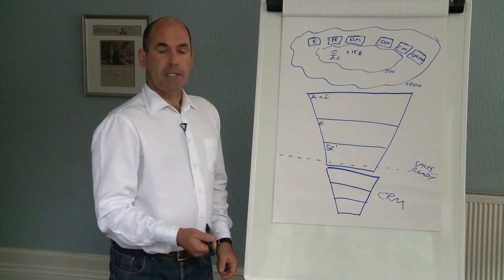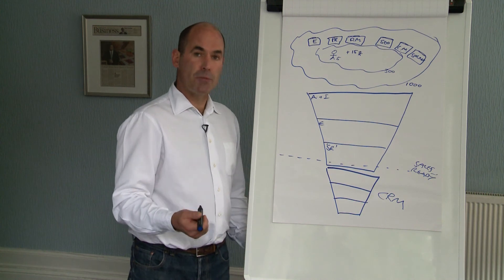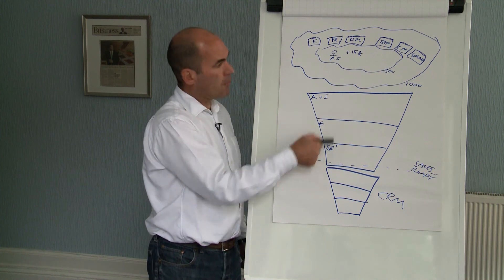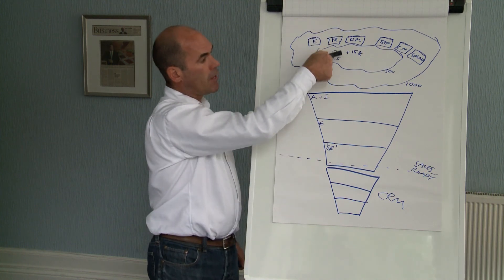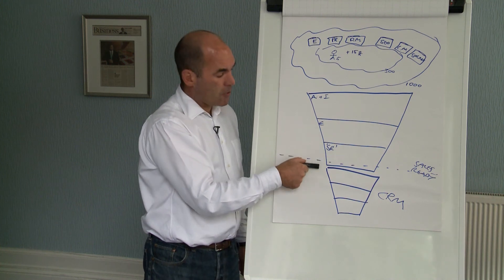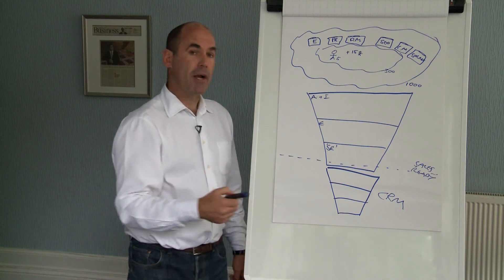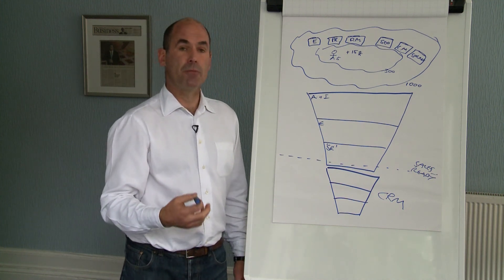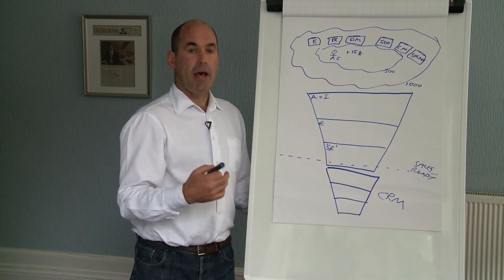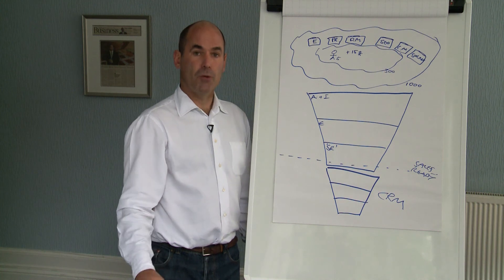So marketing has to pick up the slack. In business marketing, marketing is now responsible for finding people, building relationships with them, and getting them to sales ready. Sales is responsible for taking people that are sales ready to close. This creates a huge challenge for marketing because marketing is not equipped or skilled up to do that — hence the growth of marketing automation software, which we'll talk about in the next video.